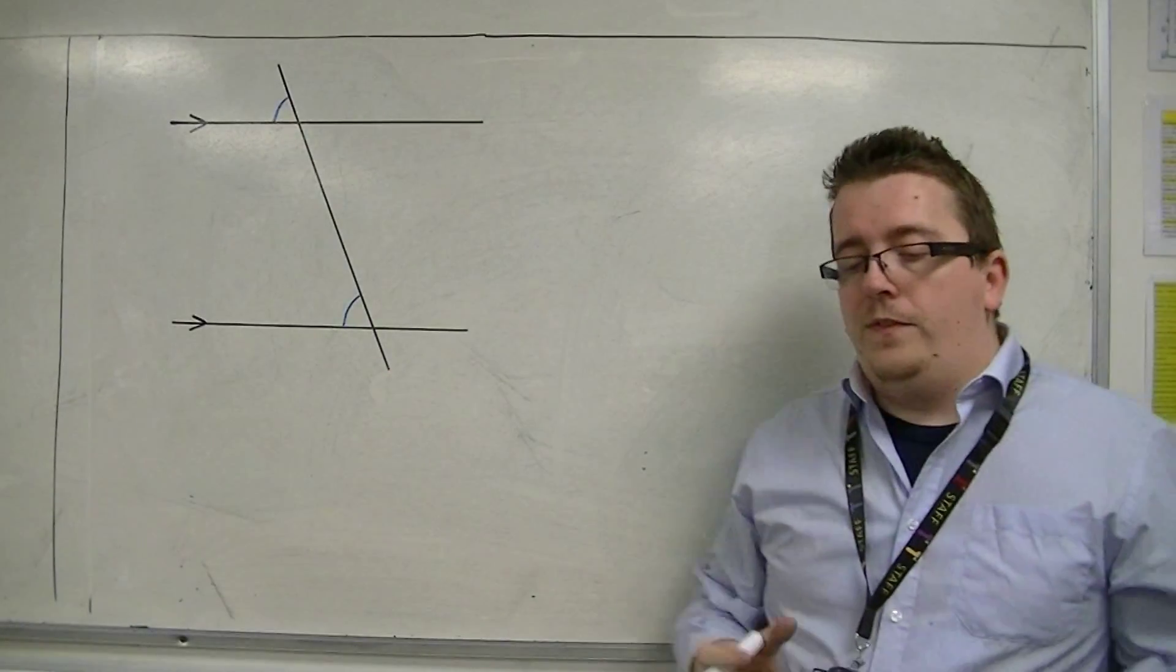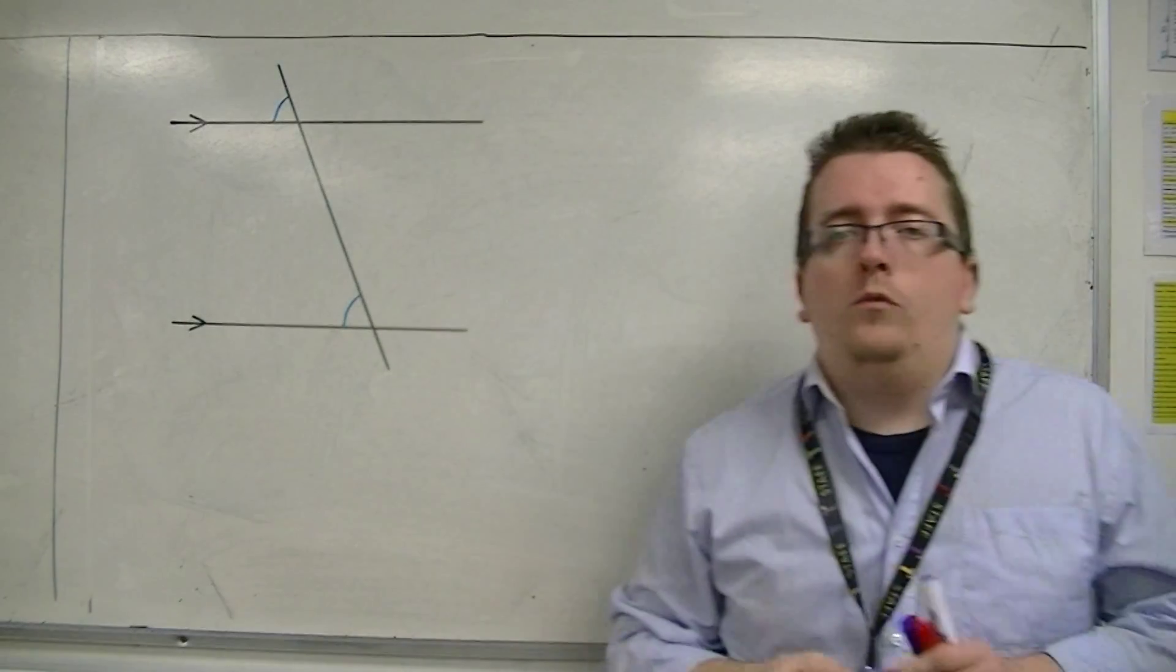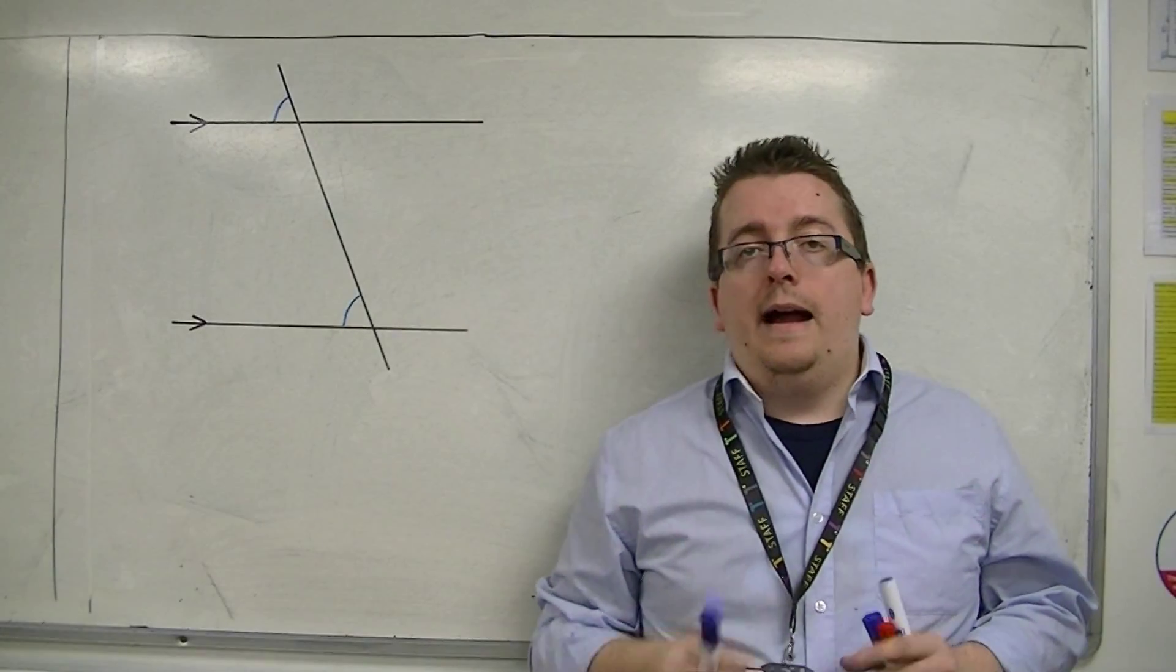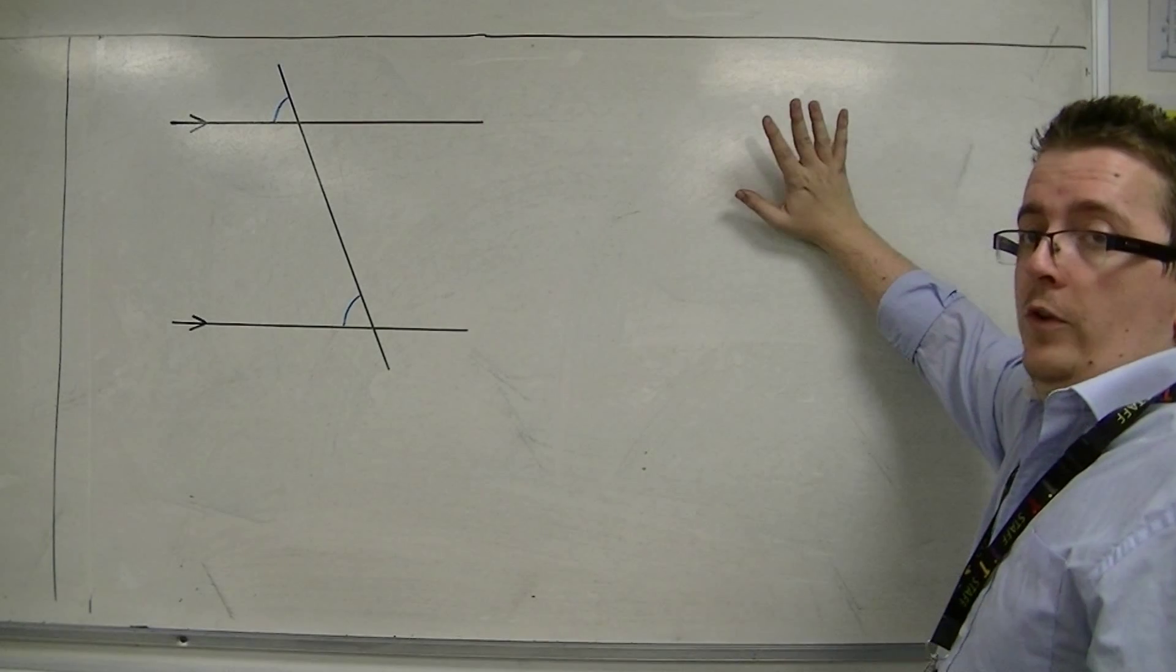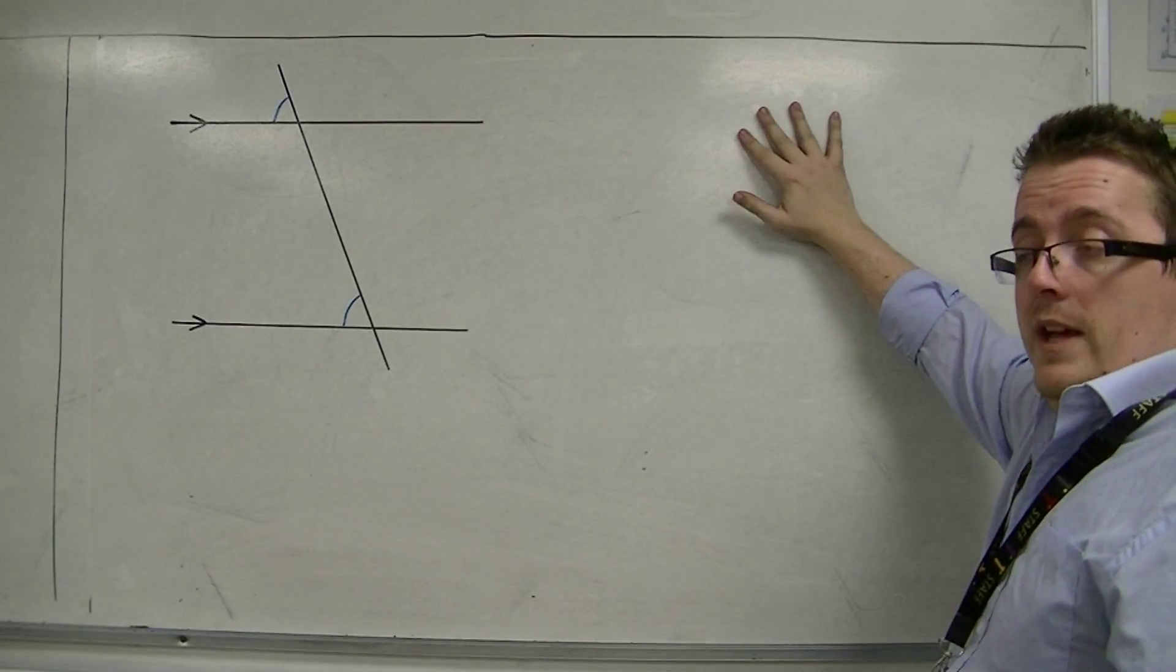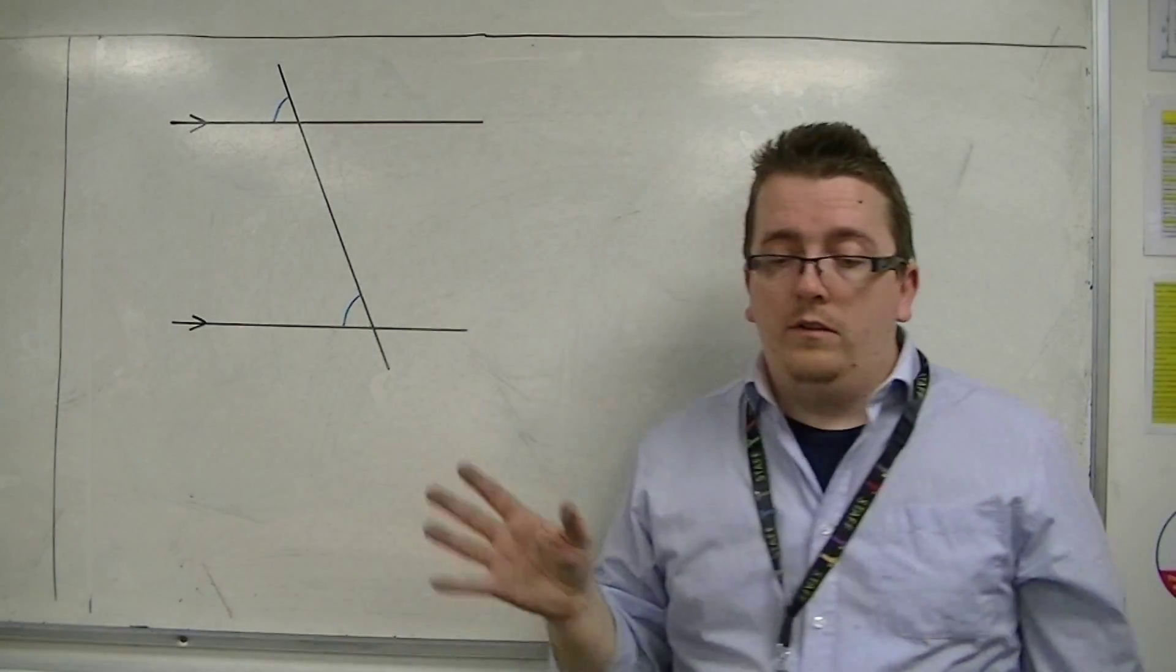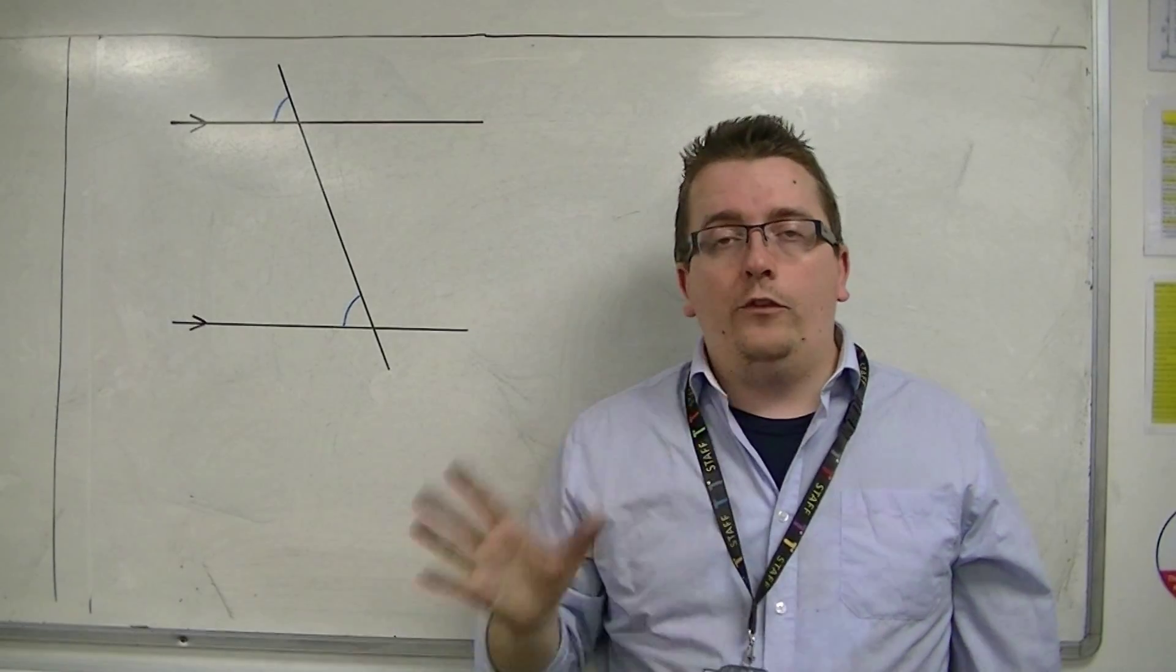One thing that you'll probably have been taught at some point is that what we're dealing with here hasn't been drawn accurately. There may actually be a sign next to the question that says 'not drawn accurately.' That just means I cannot put a protractor up to this and get the correct answer. That's fine.